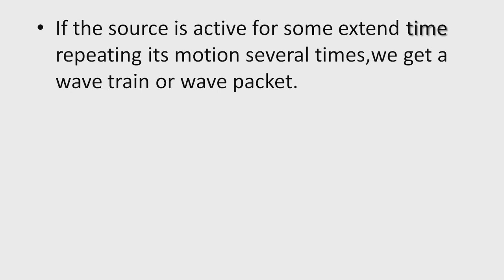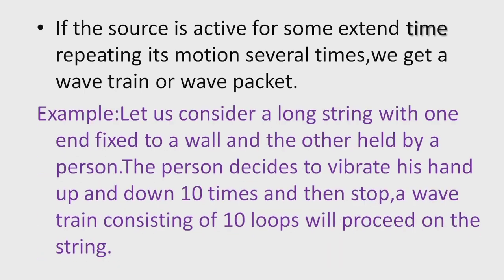But if the source is active for some extended time, repeating its motion several times, we get a wave train, also called a wave packet. For example, consider a long string with one end fixed to a wall. The person decides to vibrate his hand up and down 10 times and then stop. A wave train consisting of 10 loops will proceed along the string.